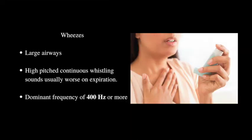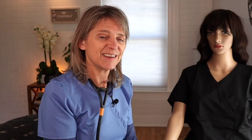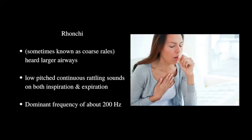First, we're going to talk about wheezing. Wheezes are in the larger airways — they are high-pitched continuous whistling sounds, usually worse on expiration. The dominant frequency for wheezing is around 400 hertz. The next one is rhonchi, sometimes known as coarse rales, also heard in the larger airways. You will hear low-pitch continuous rattling sounds on both inspiration and expiration, with a dominant frequency of around 200 hertz. So wheezes are around 400 hertz, and if it's lower around 200 hertz, that would be more consistent with rhonchi.